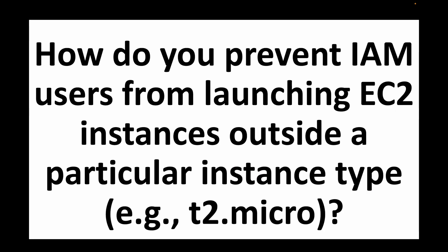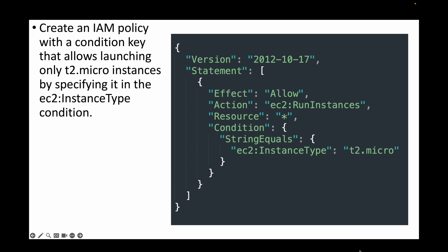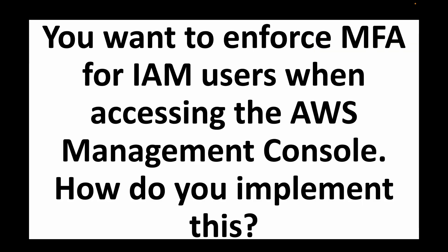The next question is: how do you prevent IAM users from launching EC2 instances outside a particular instance type, such as t2.micro? For this we define an IAM policy with a condition key. We allow the RunInstances action for EC2, but the condition specifies that only if the instance type is t2.micro can they launch instances. If they choose any other instance type, they won't be able to launch the instances.